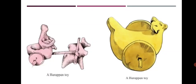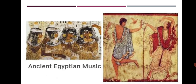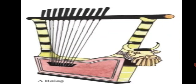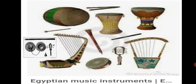Many toys were found in the excavations of Harappan sites — they include whirls, whistles, rattles, bullock carts, animals and birds on wheels, etc. Music and dance were also very important in early civilizations; they were an essential part of celebrating a festival. Ancient people used many types of musical instruments. In Mesopotamia, a strange instrument known as balak was very popular. Besides that, instruments like cymbals, rattles, flutes and drums were also played.